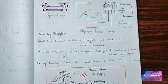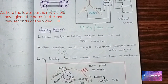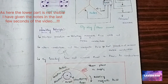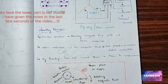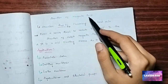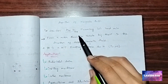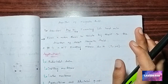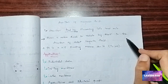Next, the direction of the current in the rotor conductors can be found using Fleming's right-hand rule. When current-carrying conductors are placed inside a magnetic field, a force is experienced by the rotor conductors. The direction of rotation can be found using Fleming's left-hand rule.